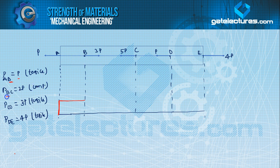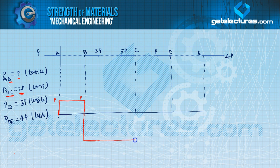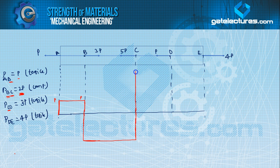Then at B — B is common to both AB and BC sections — what happens at B? The value changes to 2P compressive. From P tensile, it goes down to 2P compressive. So the diagram drops down to 2P, and this 2P compressive remains constant up to C — represented by a horizontal line. At C, which is common to BC and CD, the load suddenly changes from 2P compressive to 3P tensile — suddenly increase or decrease.